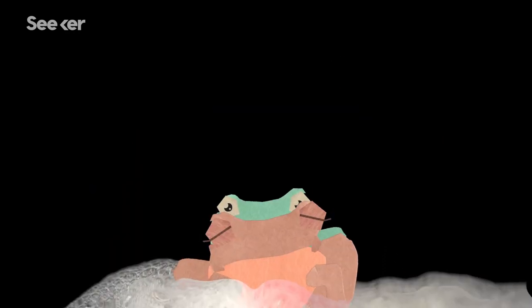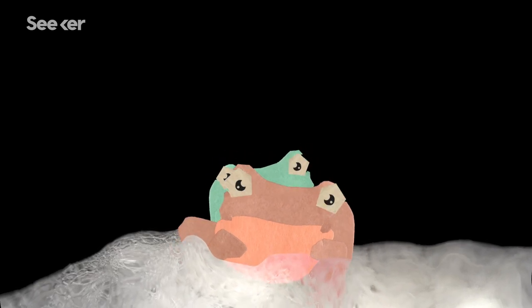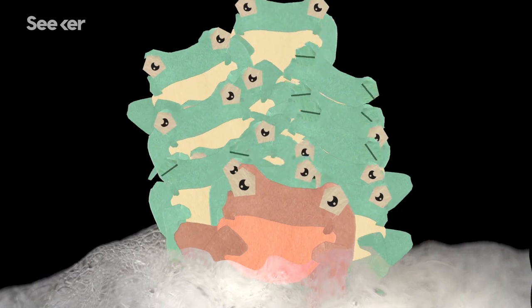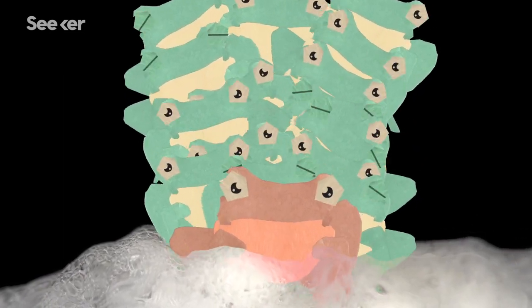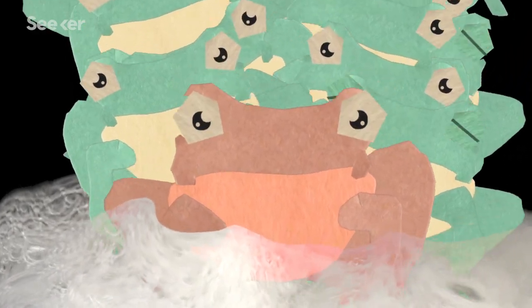It's in this foam bath that a male will copulate with the female. Oh, did I say male? I meant males. Up to 20 additional males will join the party in quick succession, earning female foam-nesting frogs the title of most promiscuous females in the vertebrate world.